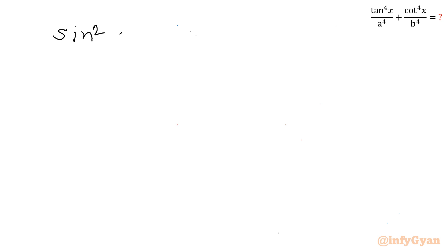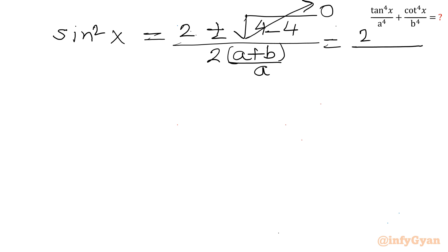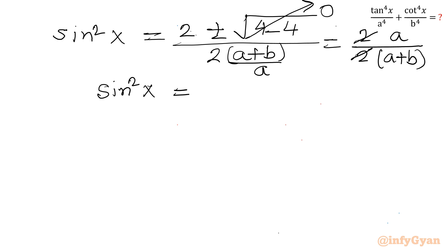Since the discriminant is zero, we get sin²x = 2 / [2·(a+b)/a] = 2 · a / [2·(a+b)]. The 2s cancel, giving sin²x = a/(a+b).